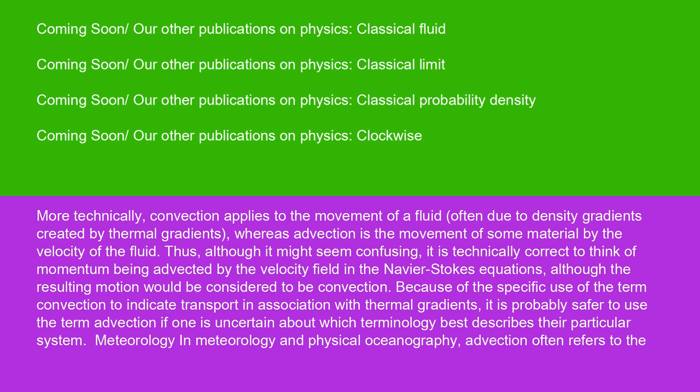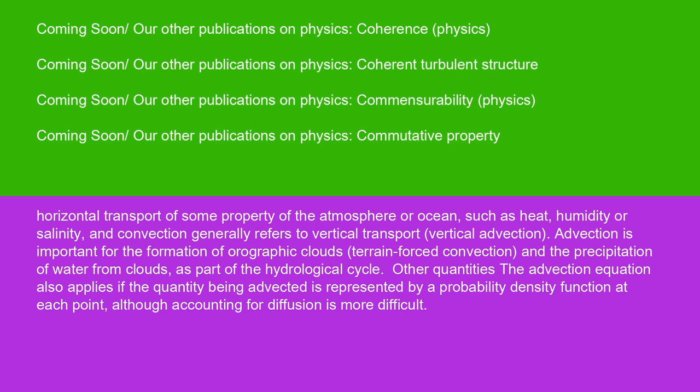Meteorology: In meteorology and physical oceanography, advection often refers to the horizontal transport of some property of the atmosphere or ocean, such as heat, humidity, or salinity, and convection generally refers to vertical transport, or vertical advection. Advection is important for the formation of orographic clouds, terrain-forced convection, and the precipitation of water from clouds as part of the hydrological cycle.